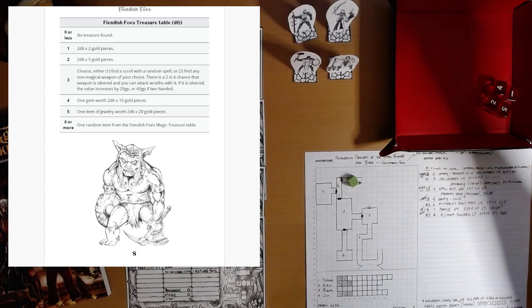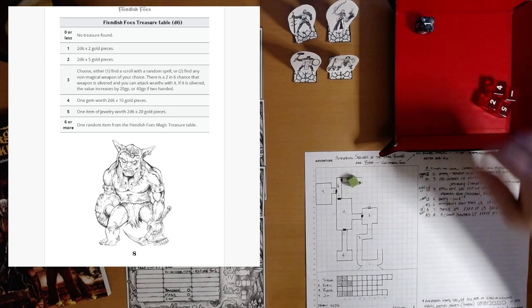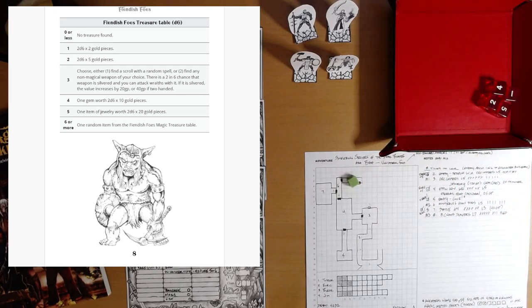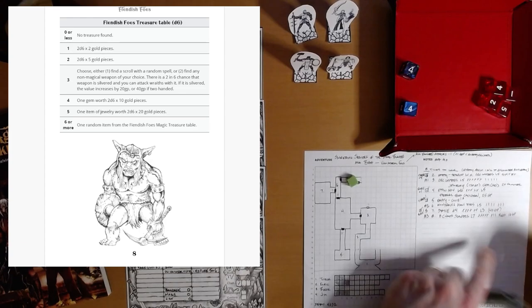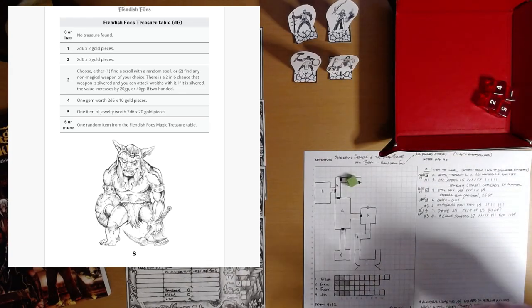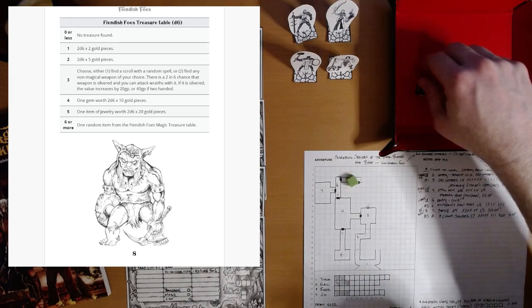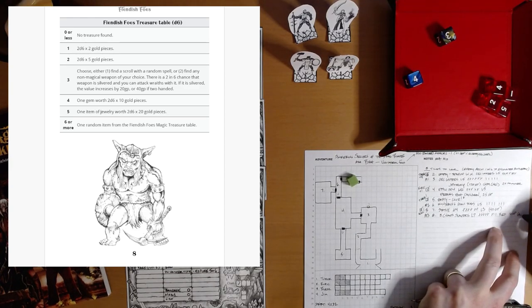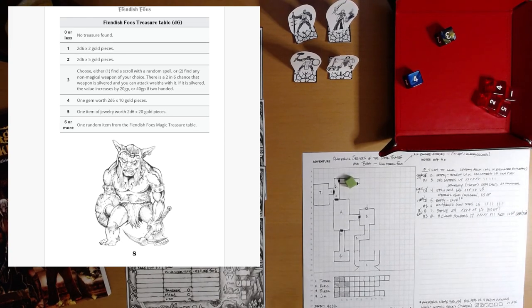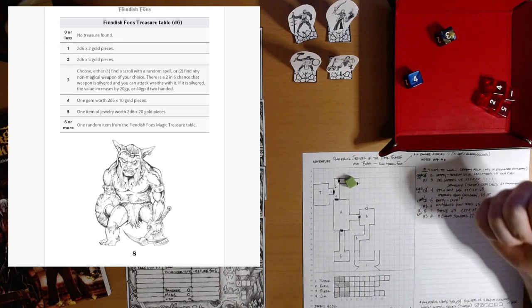2d6 times two gold pieces. Eight. So sixteen gold pieces. And four. One gem worth seven times ten gold pieces. Gem seventy. Not too shabby.